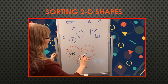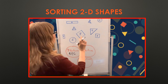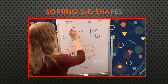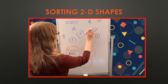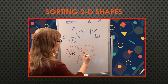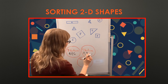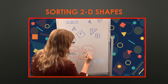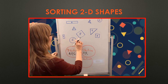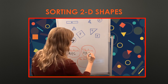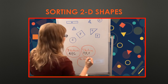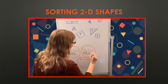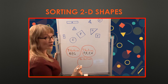G has three vertices. That's all I can see with three. For four vertices: A has four vertices — one, two, three, four. E has four vertices. F has four vertices. H has four vertices.